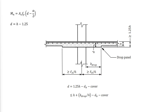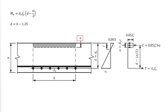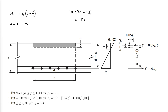For slabs with drop panels, there is a limitation on the value of d used to calculate the nominal flexural strength. The depth of the compression block A is found by equating the tensile force to the compressive force. It can then be used to find the distance C using the ratio of the compression block depth to C, which is β1, as defined in ACI Chapter 22. B in two-way slabs is the width of the column, middle strip, or B-slab.